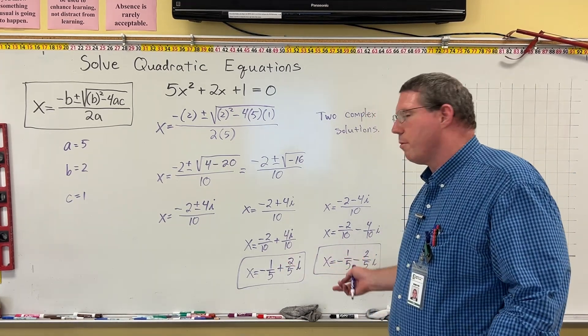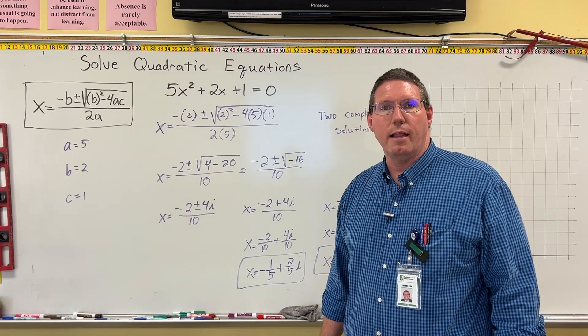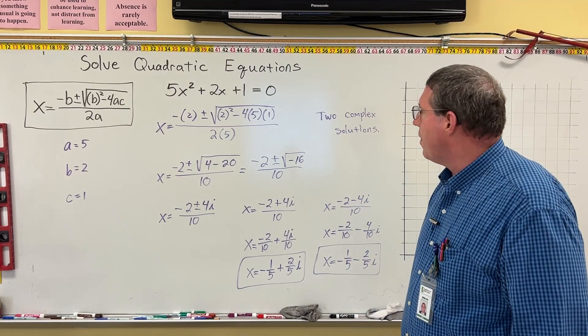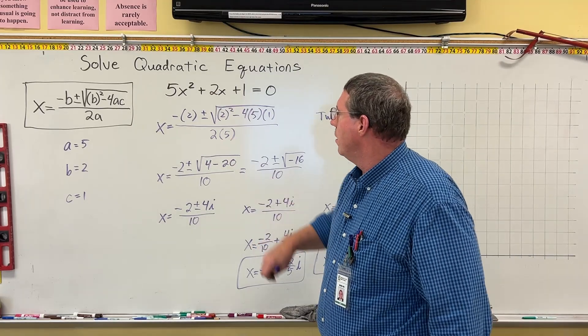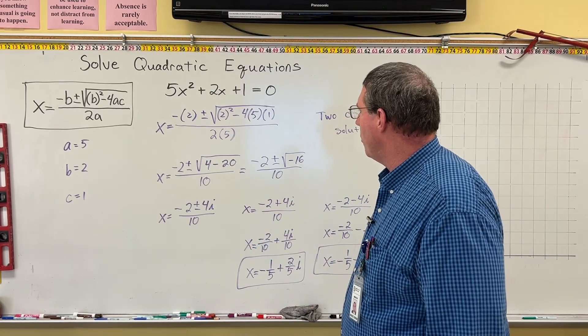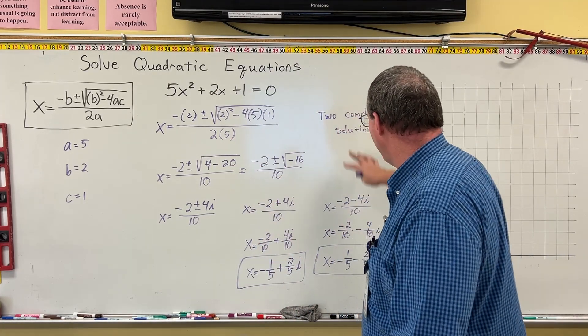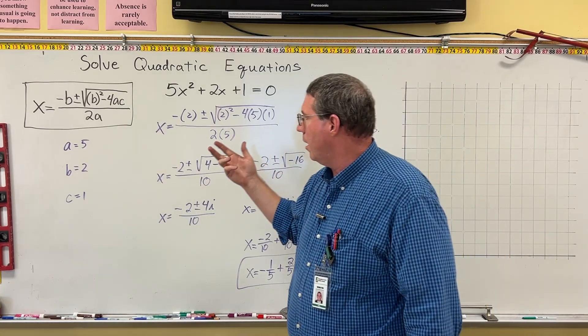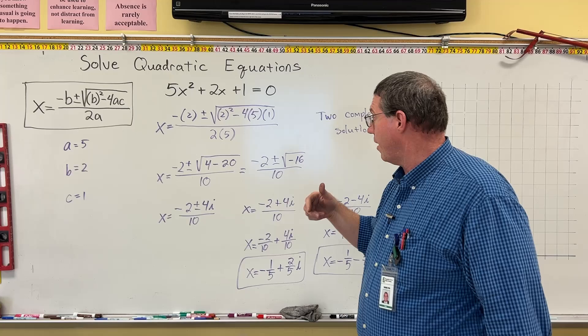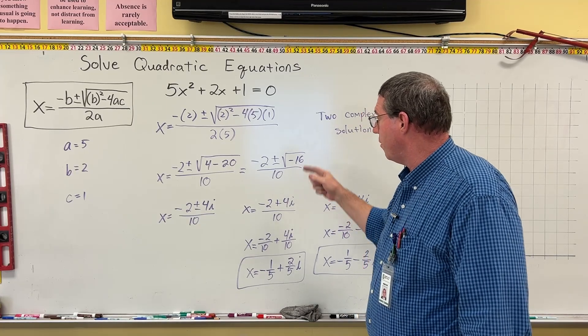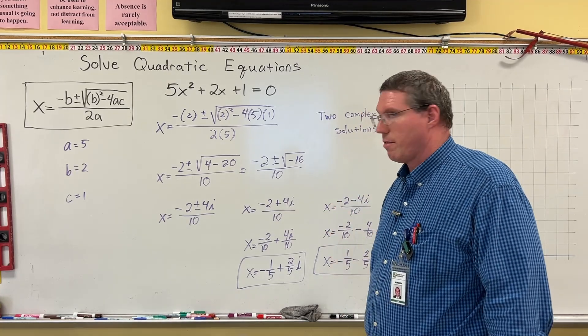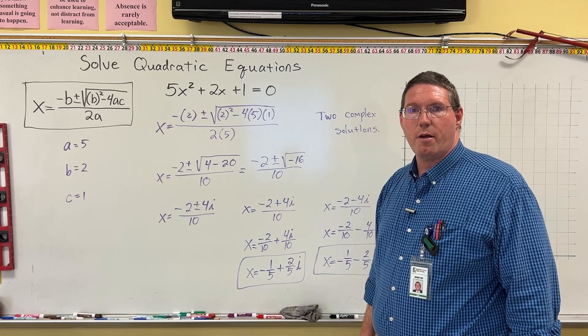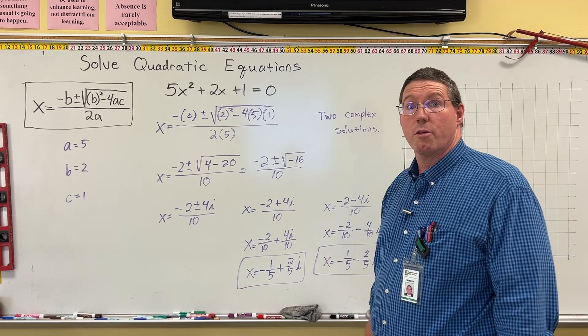And now you can see why it was so important that we do that lesson on complex numbers. All right, so that is another quadratic formula method where this one winds up with two complex solutions. So I think I've given you an example of the quadratic formula with a discriminant that's positive, a discriminant of 0, and now a discriminant that's negative. Now, in the next couple videos, I'm going to do examples of completing the square.